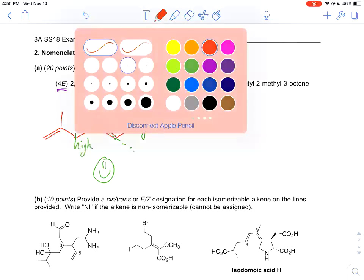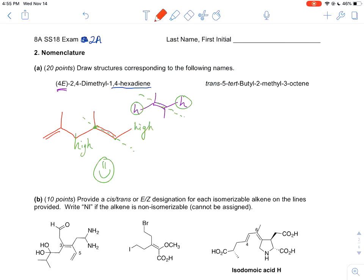Let's then move on to trans-5-tert-butyl-2-methyl-3-octene. One, two, three, four, five, six, seven, eight.